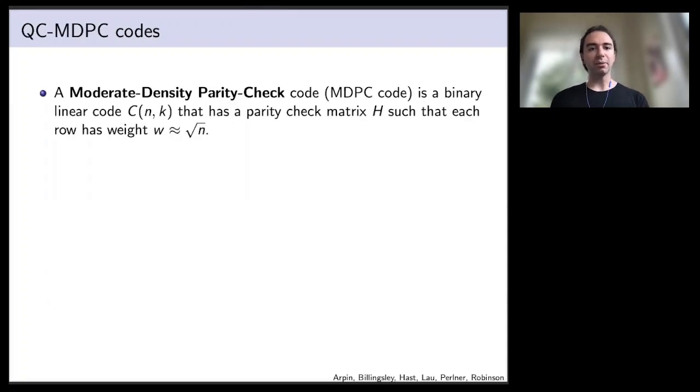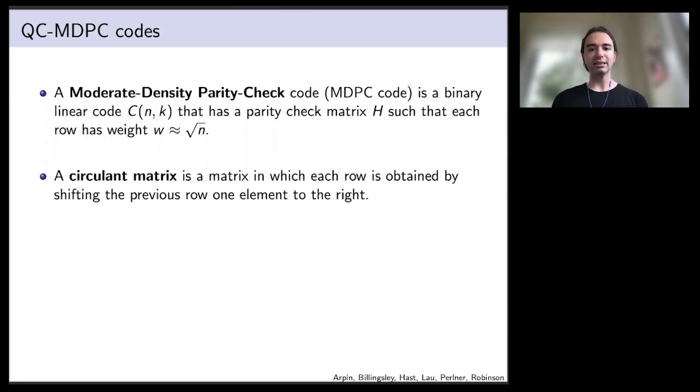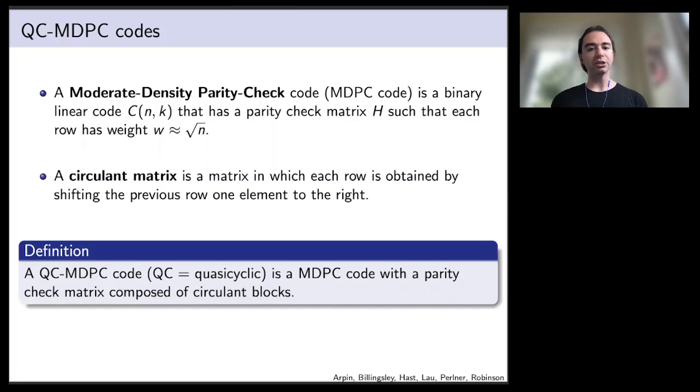Now, what is an MDPC code? A moderate density parity check code is a binary linear code that has a parity check matrix where each row has weight approximately on the order of the square root of n, the length of the message space. Here, the weight is just the number of non-zero entries of the matrix. A circulant matrix is a matrix in which each row is obtained by shifting the previous row one element to the right. A QC-MDPC code, where QC stands for quasi-cyclic, is an MDPC code that has a parity check matrix composed of circulant blocks. The whole matrix might not be a circulant matrix, but you can break it up into blocks where each block is a circulant matrix. These are the types of codes used in BIKE.